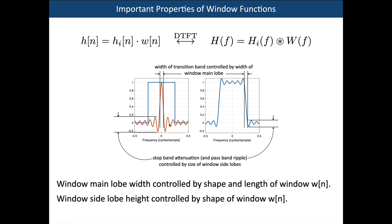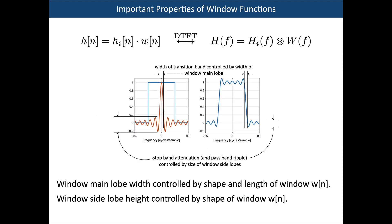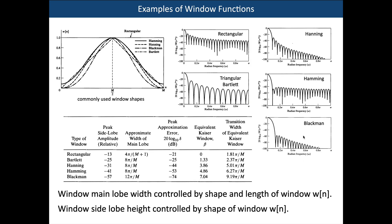Controlling the width of the main lobe affects the transition bandwidth, and the side lobe height affects the amount of ripple in the bands. If we wanted a low-pass filter with very low side lobes and little ripple, we would choose a Blackman window — but that leads to a very wide transition band. The solution is to make the filter longer, which gives a narrower transition band.